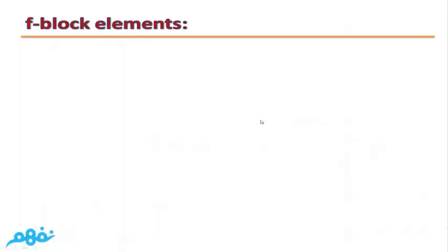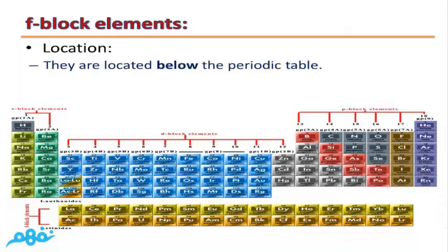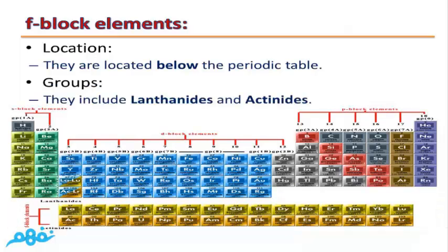Finally, f block elements are located below the periodic table and they contain lanthanides and actinides.